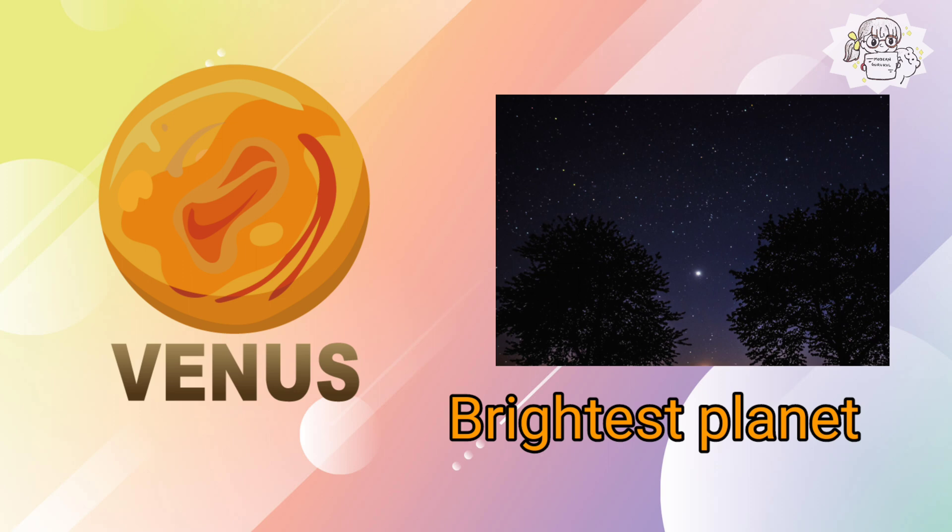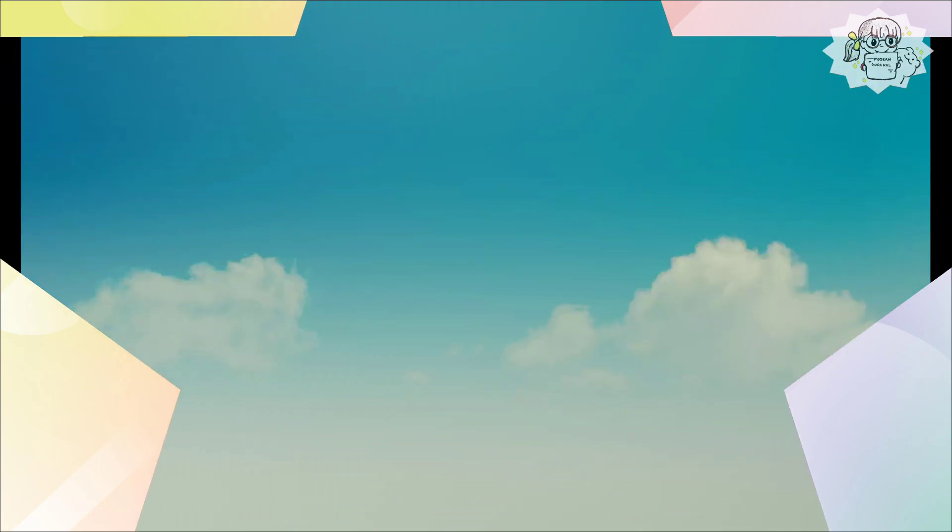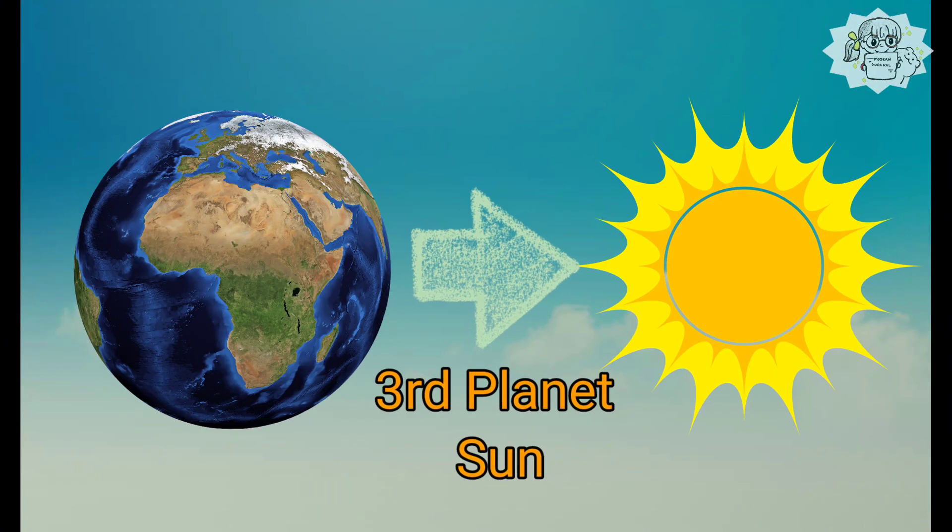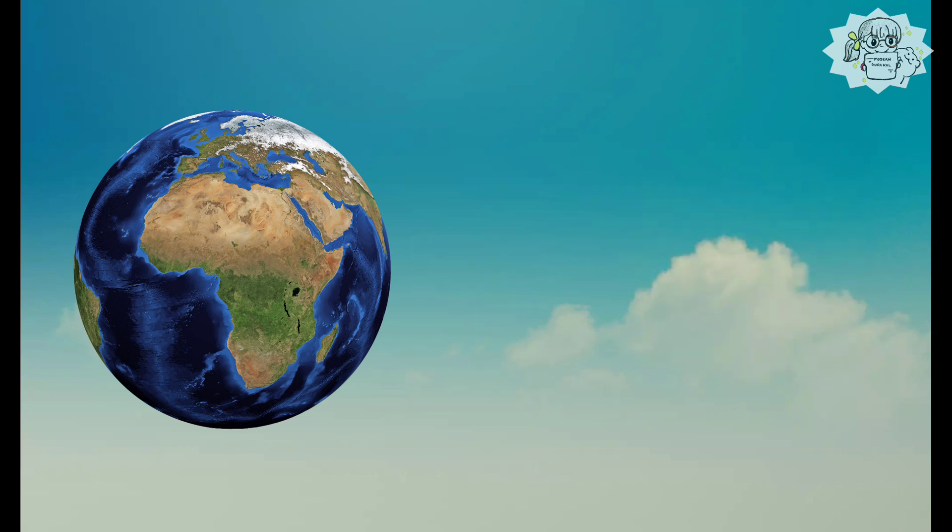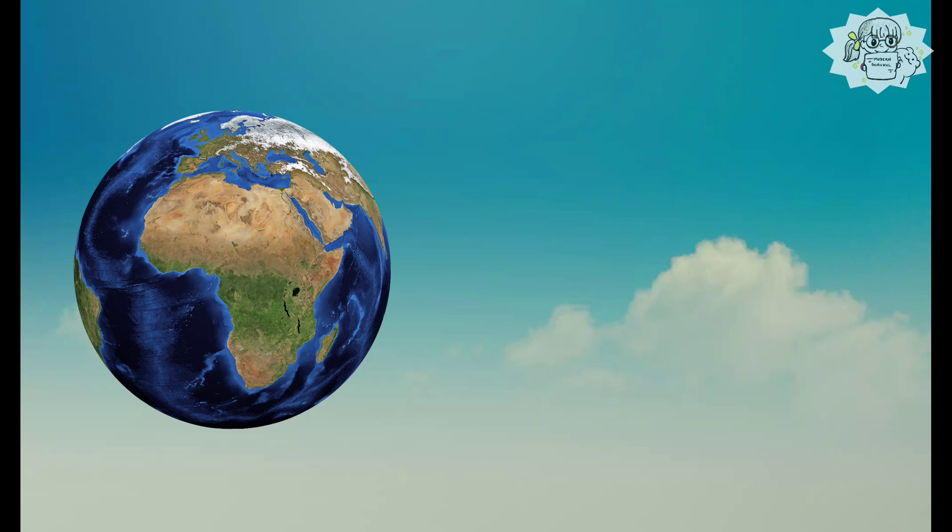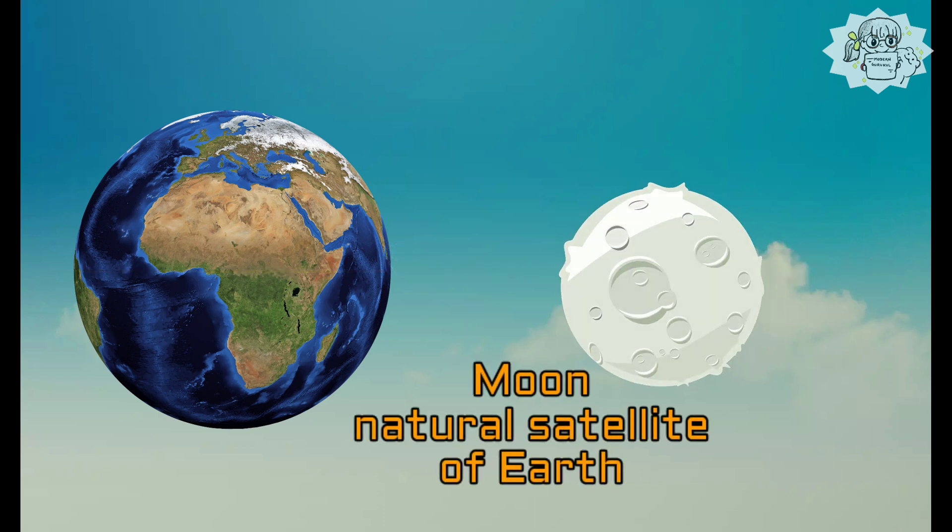The Earth is the third of the eight planets that orbit the Sun. It is the largest and densest rocky planet and the only planet known to support life. Its diameter is about 12,103 kilometers. The Moon is the Earth's only natural satellite.